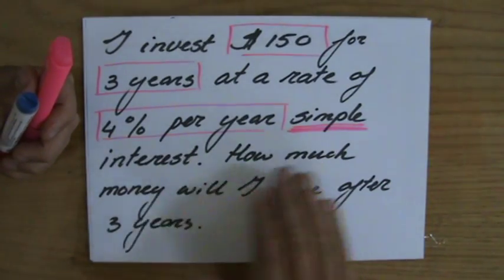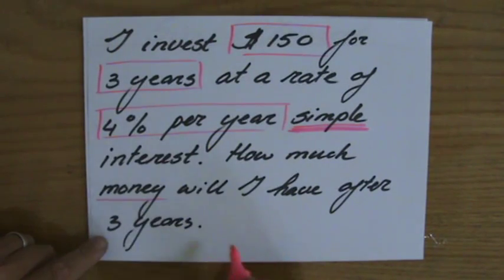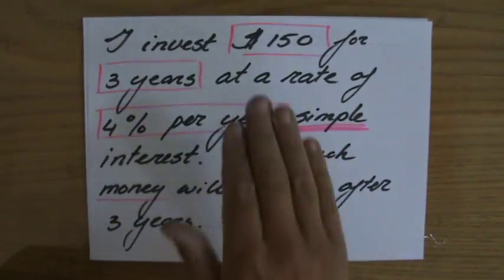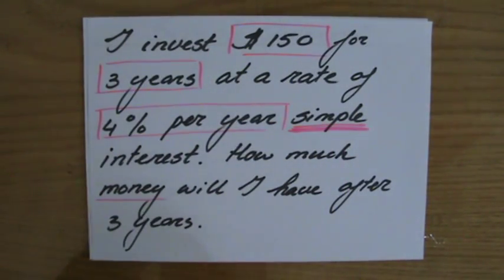How much money will I have after three years? I'm going to say something about that question at the end, but for now: $150, three years, 4% simple interest per year.